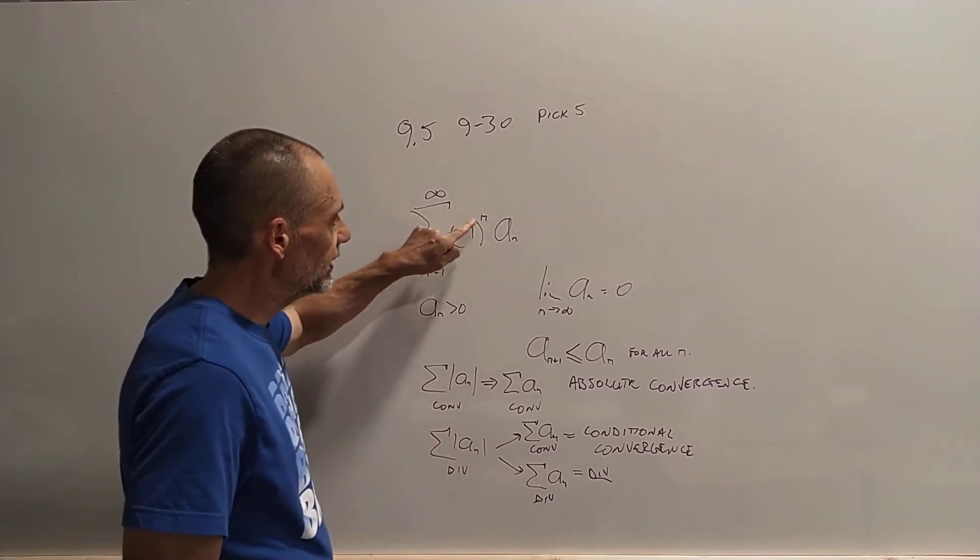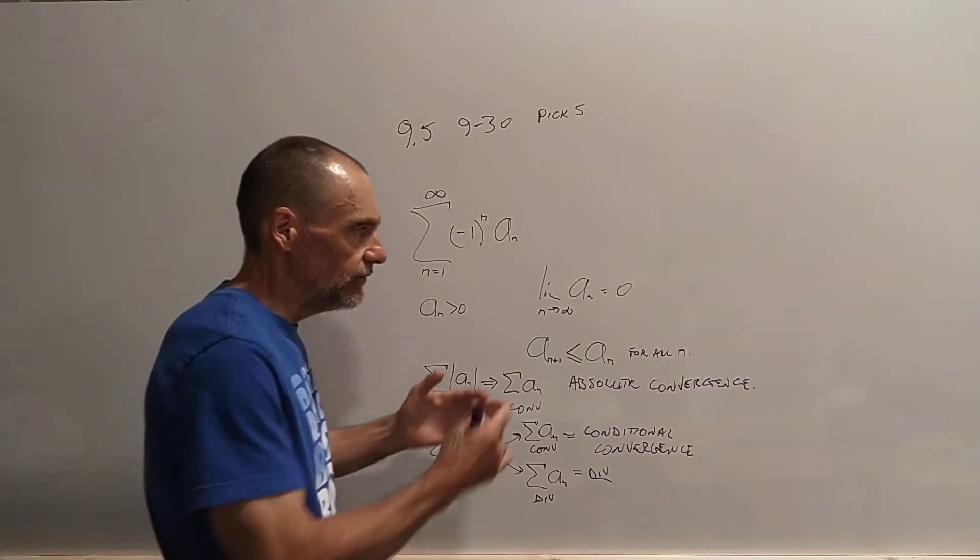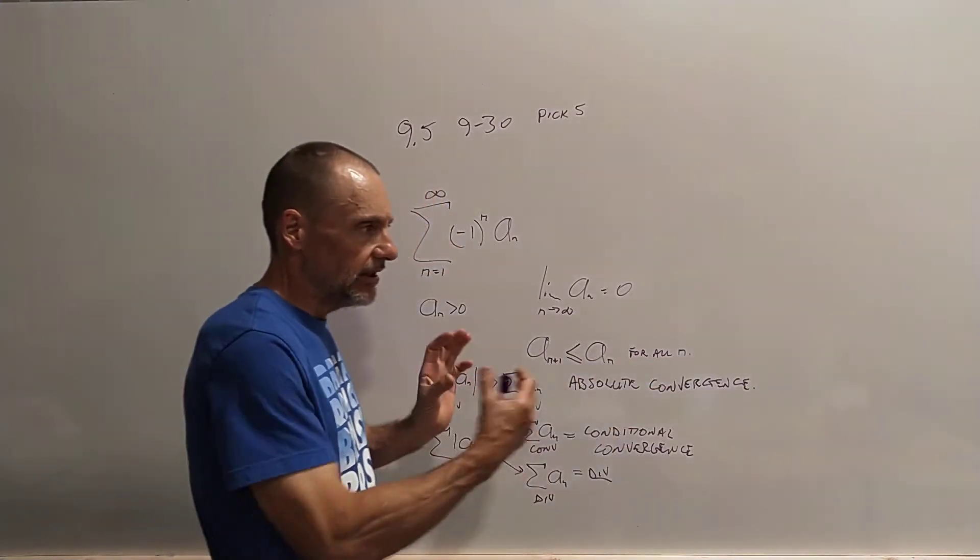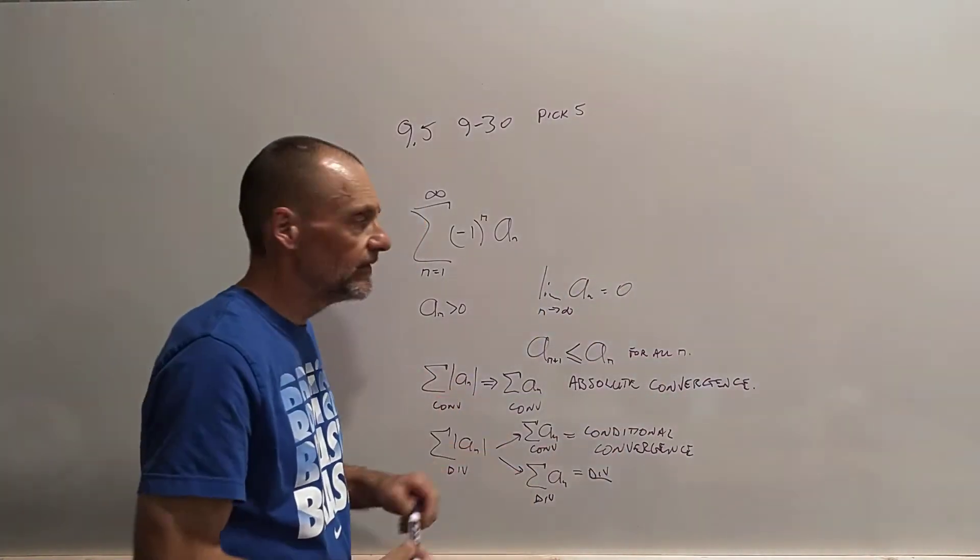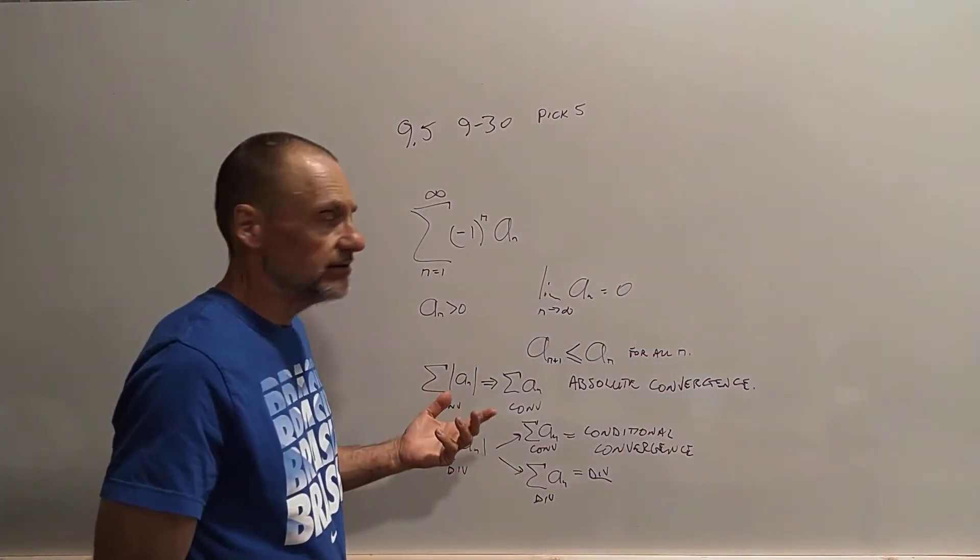Sometimes a series that's alternating doesn't actually have this, but if you write it out, you'll see that if you write out the first few terms, you'll see that with positive and negative, positive and negative, it's like a pattern. So it's an alternating series.